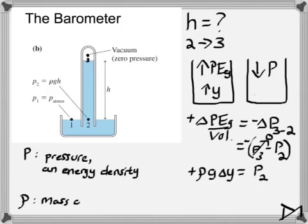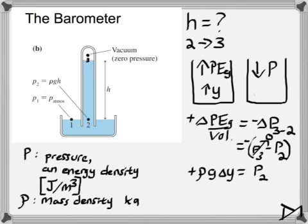Distinguish the symbol rho (ρ) for mass density from capital P for pressure. Greek letter rho for density, capital P for pressure. The units of pressure are energy per volume, or joules per meter cubed. The units of density are mass per volume, or kilograms per meter cubed. There's a similarity, but don't confuse the two.